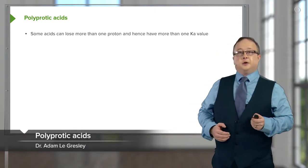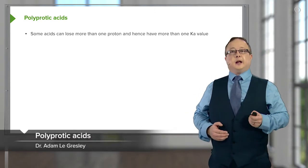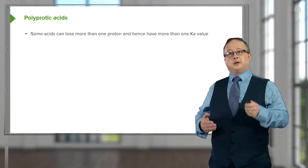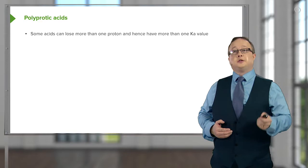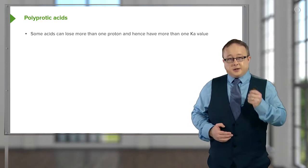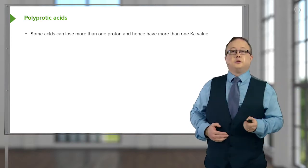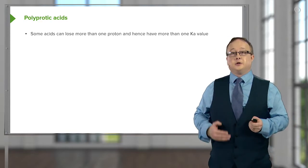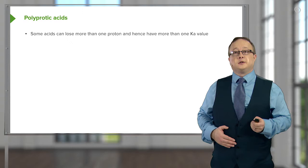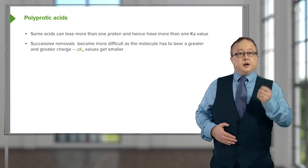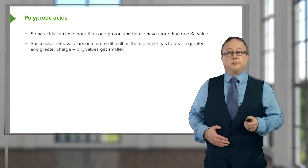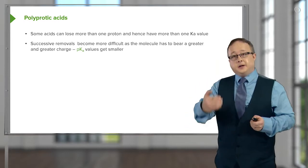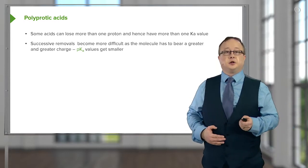I want to draw your attention to the fact that at the moment we've only been dealing with monoprotic acids — so that's hydrochloric acid, nitric acid, and also nitrous acid. But some acids, and this is very important when you're looking at, for example, phosphate buffered saline solutions within medical practice and so forth, is that you can lose more than one proton, and therefore it's possible to have more than one Ka value for each successive deprotonation reaction.